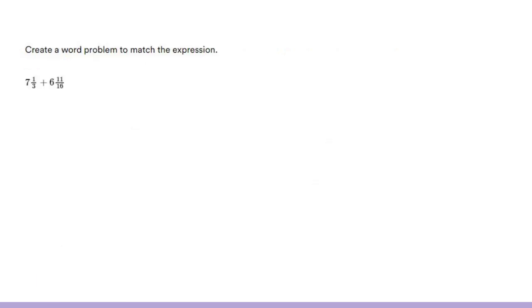The third station gives us some creativity. It says, create a word problem to match the expression. In this video, I'm going to give you pointers for how you could write a word problem here. We know that we have unrelated units. 7 and 1 third is unrelated to 6 and 11 tenths. So, we don't need to change those fractions at all. In order to create a word problem, we just need to create context for these two fractions.